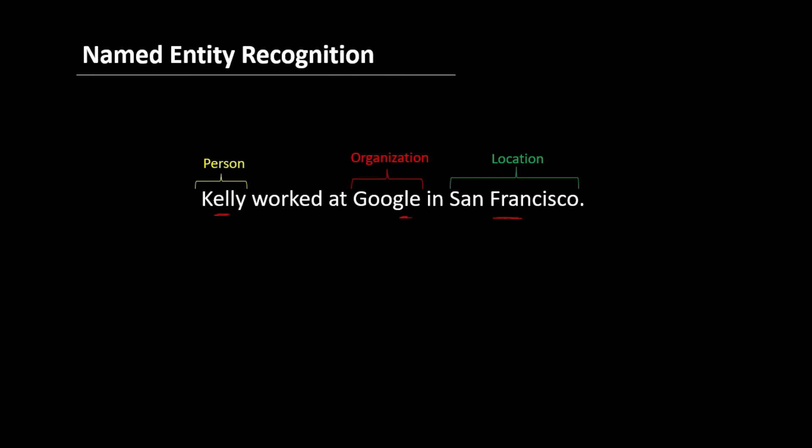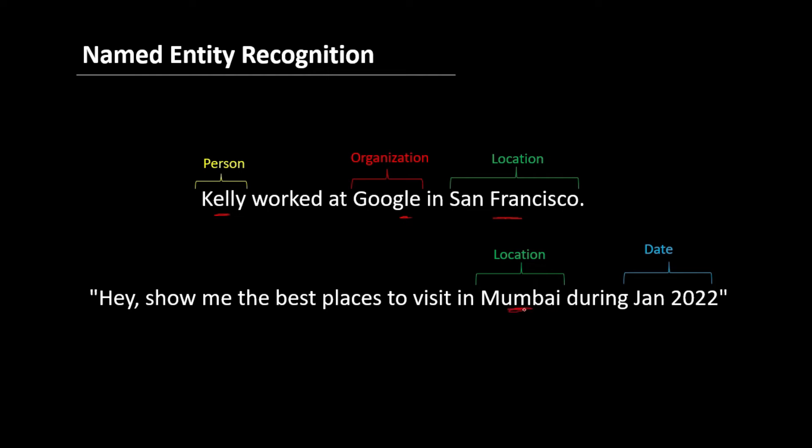These kinds of applications are very useful. For example, let's say if we are interacting with a chat bot and we pass this message as, Hey, show me the best places to visit in Mumbai during January 2022. So the chat bot must know that the Mumbai is a location and January 2022 is a date.